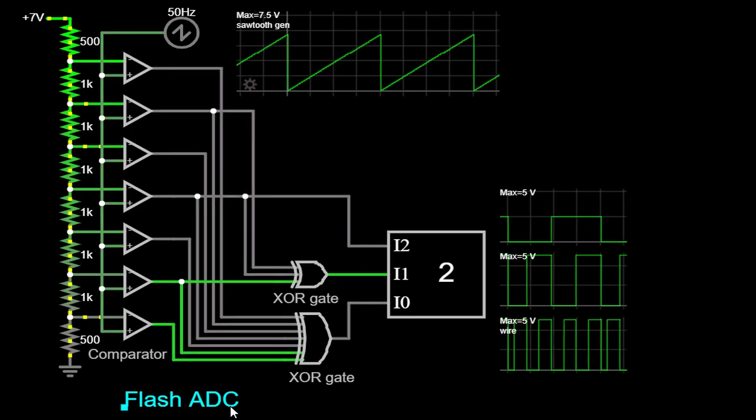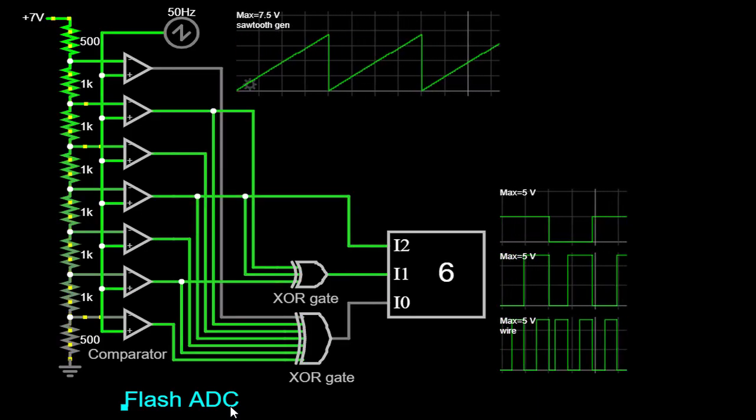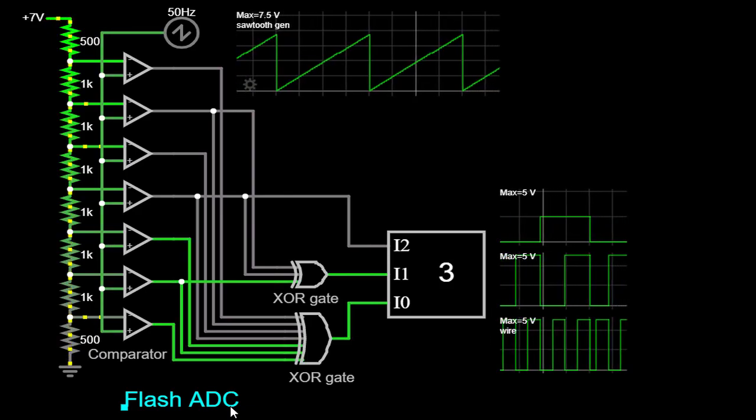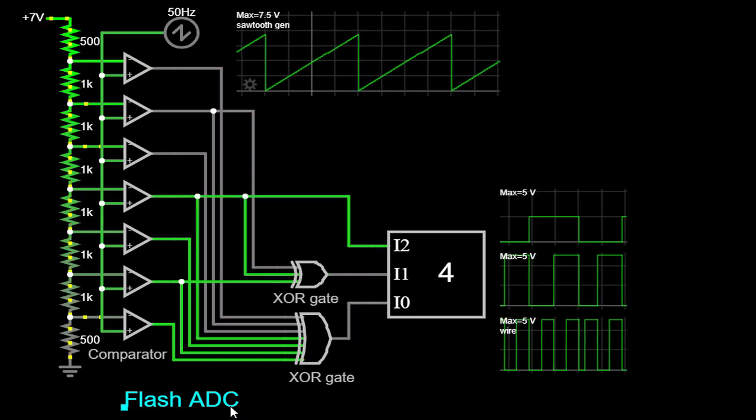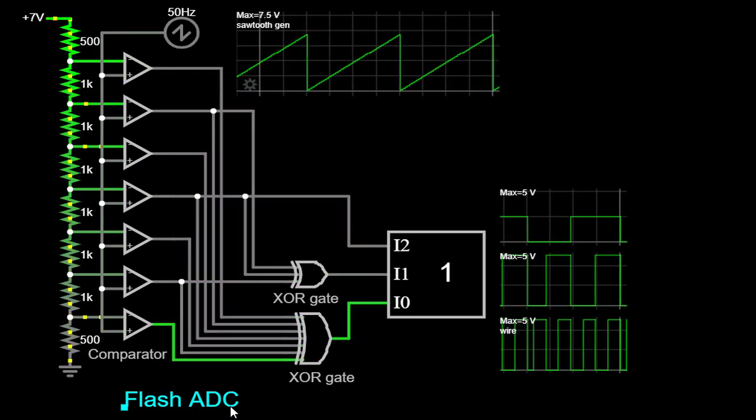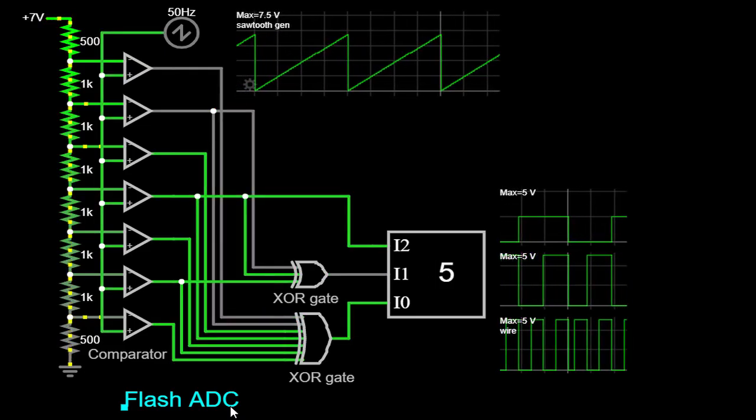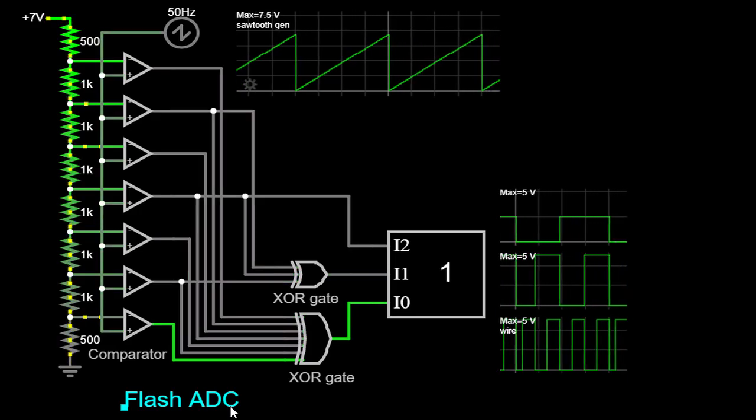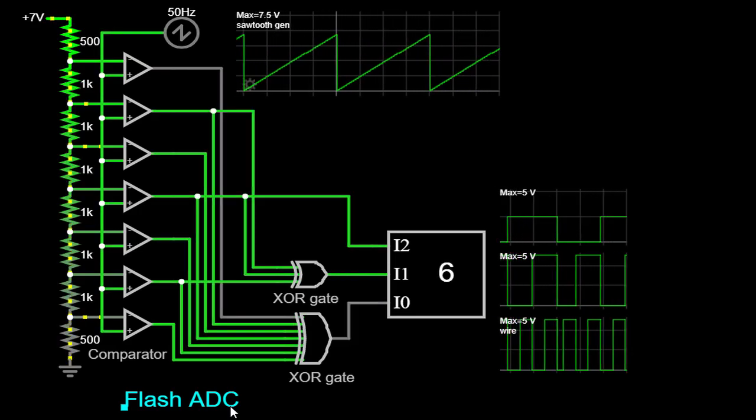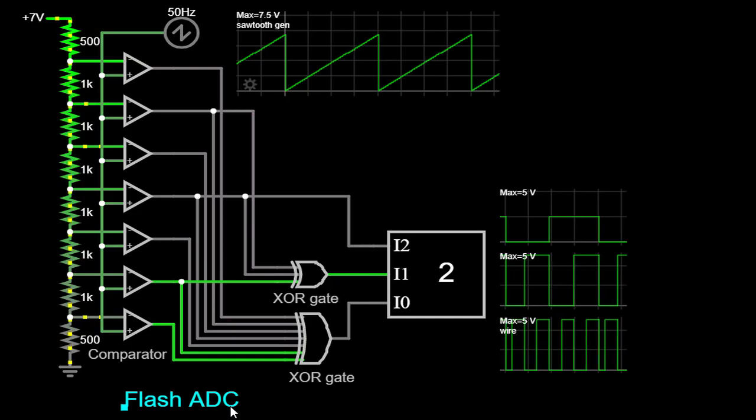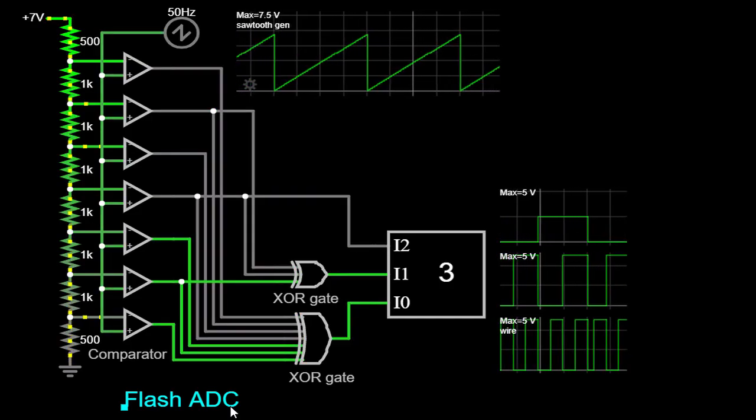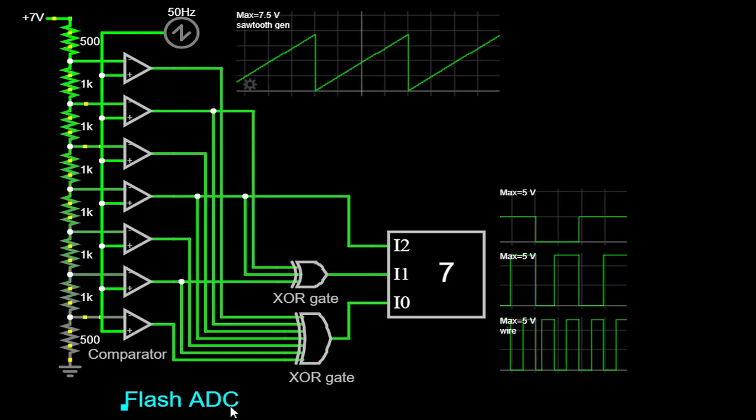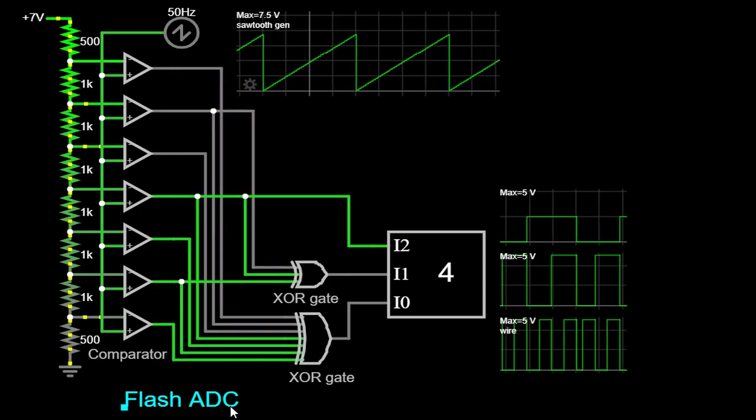In summary, Flash ADCs are powerful devices for fast and precise analog-to-digital conversion. They utilize a parallel architecture and an array of comparators to compare the input voltage against a set of reference voltages, generating a digital output that represents the input signal. Through the use of simulators, we can observe and understand the operation of Flash ADCs, gaining insights into their behavior and characteristics.